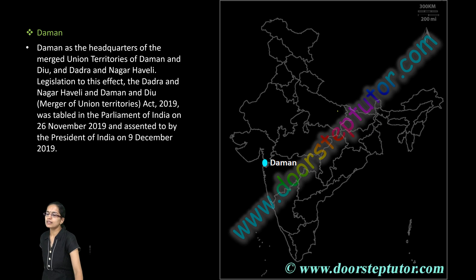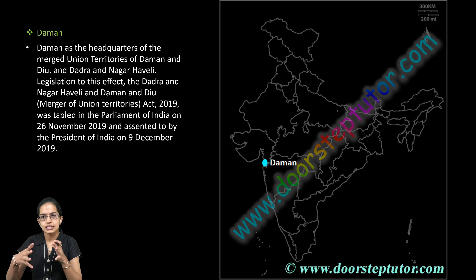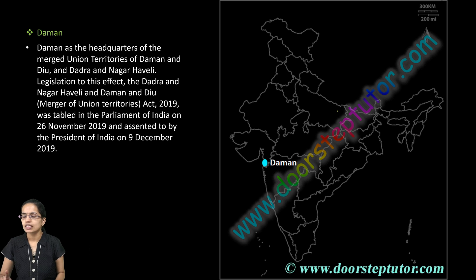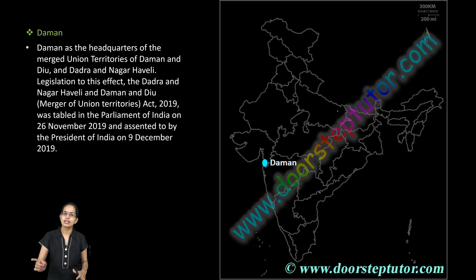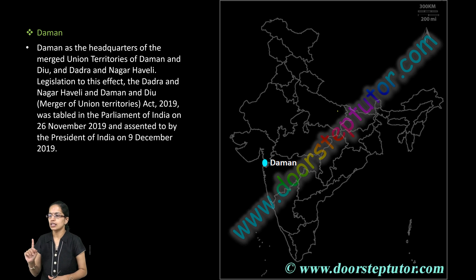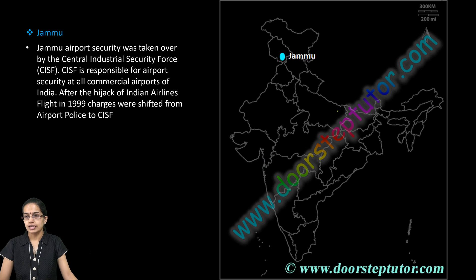The next is Daman. Recently, Daman and Diu merged into a single union territory with Daman as the capital. This was under the Dadra and Nagar Haveli and Daman and Diu merger under the Merger of Union Territories Act 2019, in November 2019.